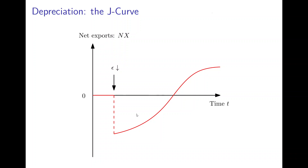Since this curve looks a little bit like a J, it's called the J-curve, and it depicts the dynamic effects of the depreciation. We need to be aware that a depreciation will definitely have different effects in the short run compared to the medium to long run, and it's not guaranteed that a decrease in the value of the currency will lead to an increase in net exports. In the short run it will not, and even in the long run it only will if the Marshall-Lerner condition is fulfilled — which is, however, the likely case.